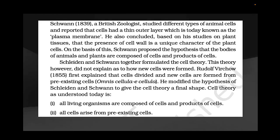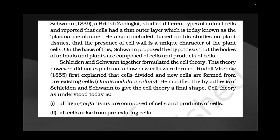On the basis of this, Schwann, the British zoologist, proposed the hypothesis that the bodies of animals and plants are composed of cells and products of cells. Schwann studied animal cells and noted that animal cells have a thin outer wall, while plants have a thick cell wall. Schleiden and Schwann together formulated the cell theory. This theory, however, did not explain how new cells were formed.